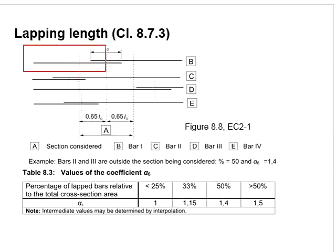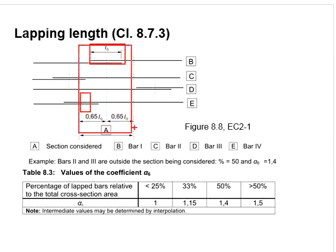Only bar B has the center of the lapping length within the considered section. Assuming the size of reinforcement bar for B, C, D, and E are the same, having only two lapping lengths within the considered sections will represent 50% of the percentage of the lapping bar relative to the total cross-sectional area.